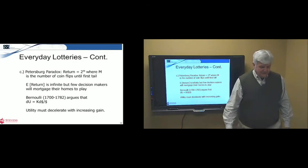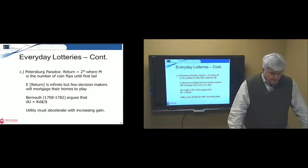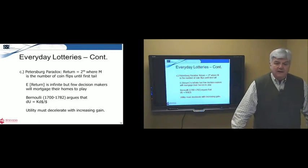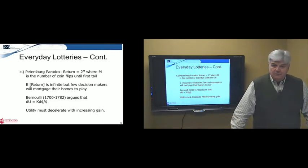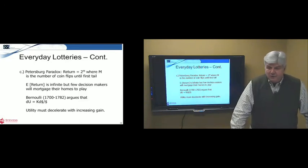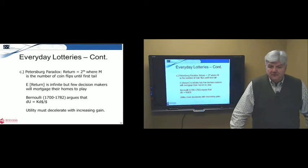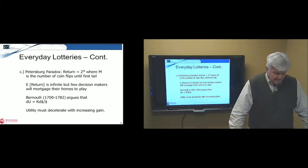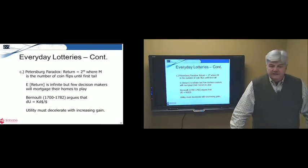A third lottery, this is a thing called the Petersburg Paradox. It's been around for a long time. We're going to flip a coin, and you will get paid 2 to the M, where M is the number of coin flips until we hit the first tail. This series is such that if we calculate the expected return, it's infinite. It doesn't converge. It's infinite. But few decision makers would mortgage their homes to play this. Most people would be willing, certainly willing to play a dollar, because if the first number of flip M, if M equals 1, the first flip is a tail, you get a dollar, 2 to the 0. Daniel Bernoulli, back in the 1700s in France, I mentioned him earlier, basically argued that this must mean that utility at some point has a diminishing returns. In other words, it decelerates with increasing gain.